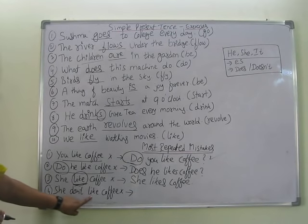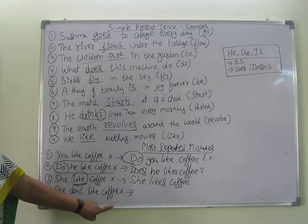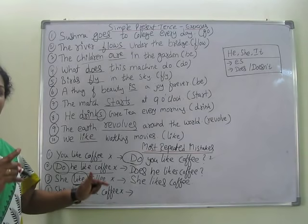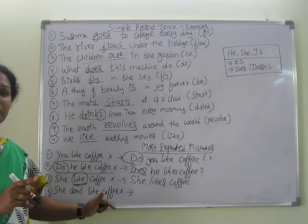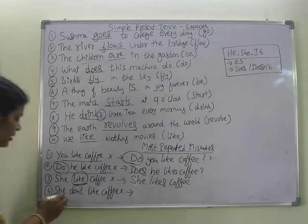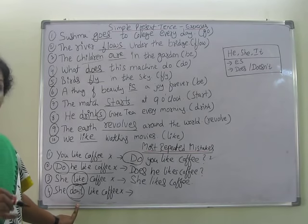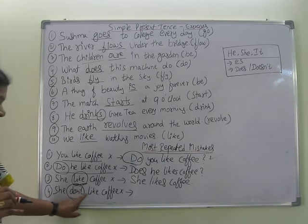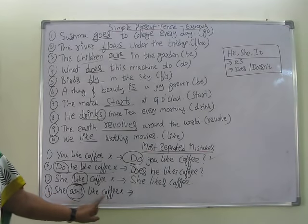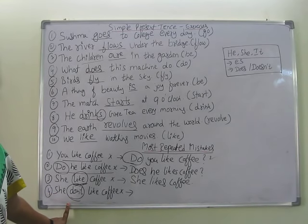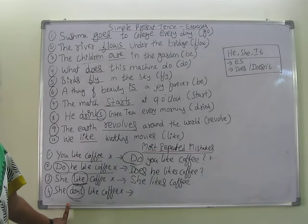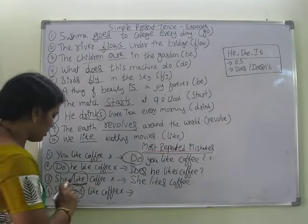Next mistake: 'She don't like coffee' — she don't is wrong. Whenever she, he, or it comes, rather than 'don't' you must use 'doesn't'. Never say 'she don't', 'he don't', or 'it don't'. The correct sentence is: She doesn't like coffee.